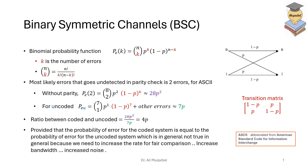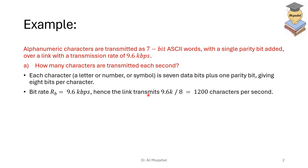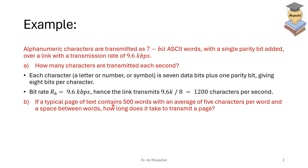Let's look at an example. Alphanumeric characters are transmitted as seven-bit ASCII words with a single parity bit added, over a link with a transmission rate of 9.6 kilobits per second. How many characters are transmitted each second? Each character is seven bits plus one parity bit, making eight bits. So we divide 9.6k by 8 to get 1200 characters per second.